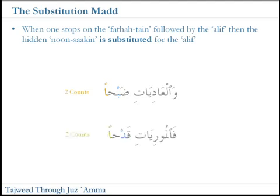Here's another example: 'fal-mur-ya-ti-qad-ha'. Same thing again — instead of 'han', we say 'ha', and it's always two counts long. And that brings us to the end of the substitution mad.